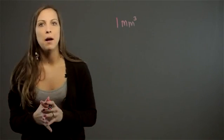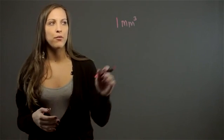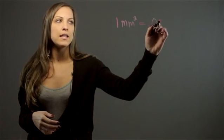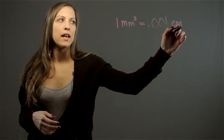So we're going to talk about one millimeter cubed rather than just a millimeter. So the conversion rate from a millimeter cubed into a centimeter cubed is going to be .001 centimeters cubed.